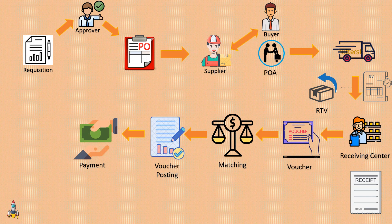Once payment has been made to the vendor, there is another process called payment posting. Earlier, voucher posting created accounting entries between the expense account and the control account; now payment posting creates accounting entries between the control account and the cash account. Once payment posting is complete, we enter the final section: creating accounting entries in the general ledger. A journal is created for this expense through the journal generator process, it goes through journal edit, and if everything is fine the journal is finally posted into the general ledger, recording the expense in the organization's books.